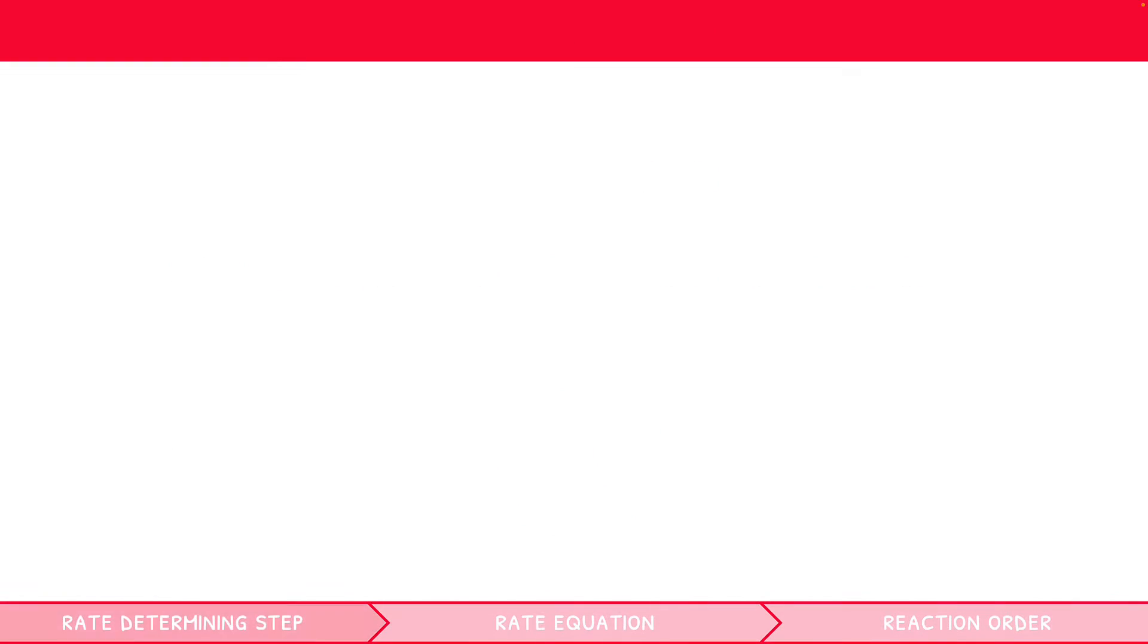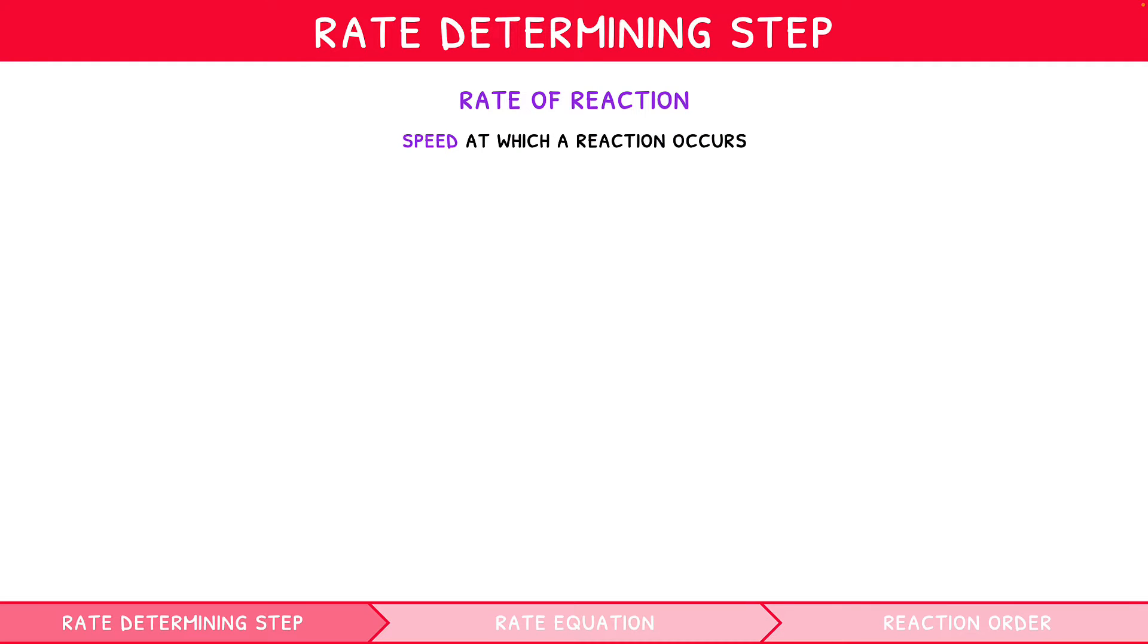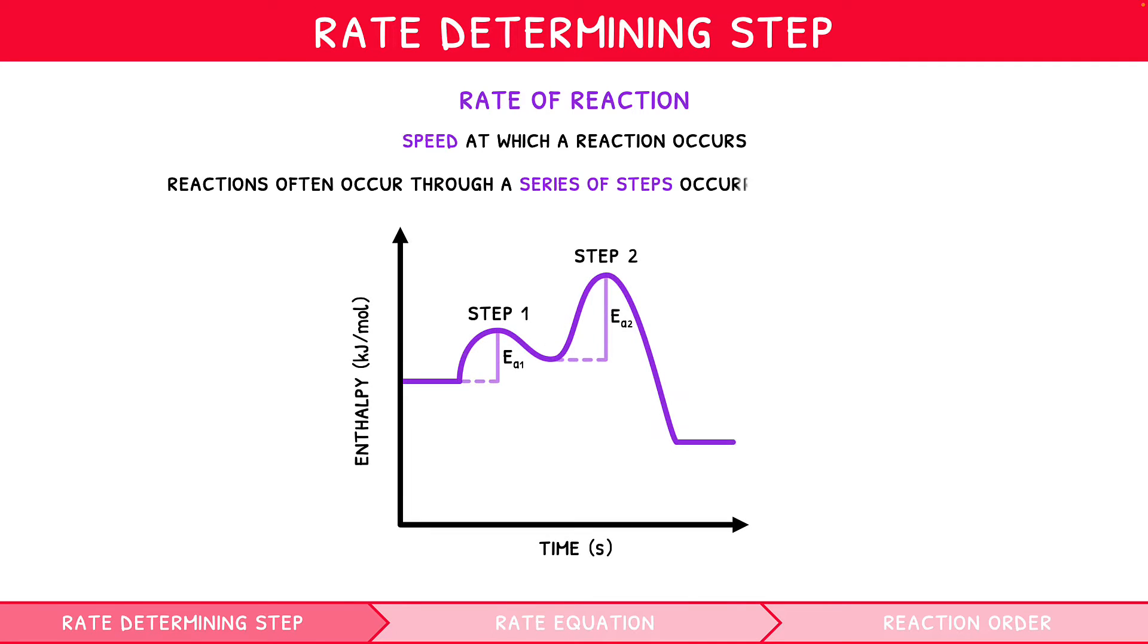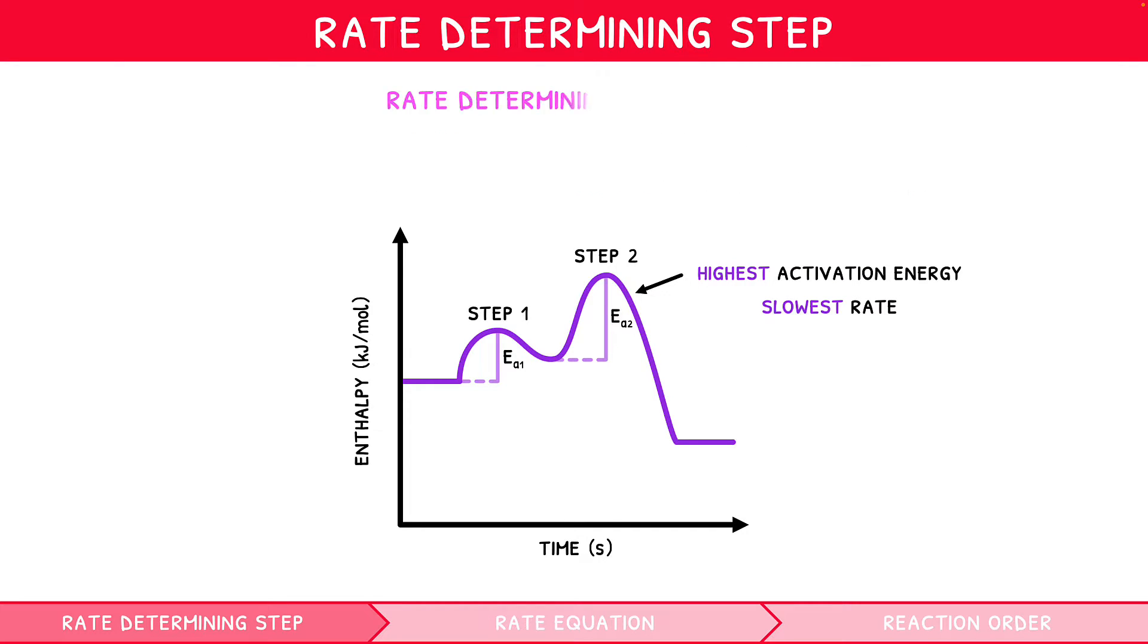As discussed in our IB Chemistry Topic 6 video series, a reaction rate reflects the rate at which a single reaction takes place. However, reactions represented by stoichiometric equations often occur through a series of steps occurring at different rates. It therefore follows that one of these steps must have the highest activation energy, and thus be the slowest. It is named the rate-determining step, and is formally defined as the slowest step of a reaction which controls the overall rate of reaction.